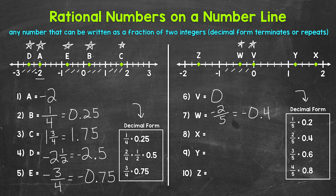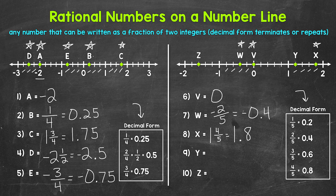Moving on to number eight, we have point X, which is between one and two. We have one and one fifth, one and two fifths, one and three fifths, and one and four fifths. So point X is at one and four fifths, which in decimal form is 1.8. For number nine, we have point Y, also between one and two, at one and one fifth — which in decimal form is 1.2.